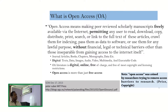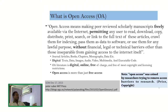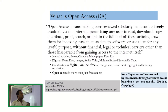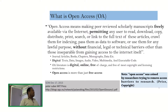Open access is the next concept. If you have data and make it accessible for everyone without restriction or barriers, we call it open access. Open access means making peer-reviewed scholarly manuscripts freely available via the internet, permitting any user to read, download, copy, distribute, print, search, or link to the full text of these articles, as well as crawl them for indexing, and pass the data or software to others for a lawful purpose — without financial, legal, or technical barriers.